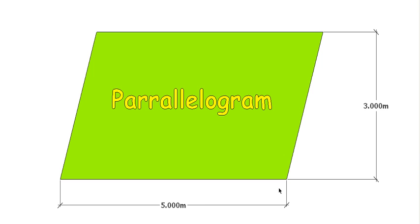We have some dimensions. This one's five meters long and this distance here, it's not the length of this side, it's what we call the perpendicular height. So it's the distance from that edge to that edge in a straight line, not following that angle. So that's three meters.